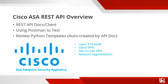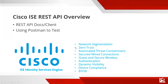Let's talk about the ISE REST API. This one is a little different and more interesting because ISE is such an amazing platform. We'll look at the API client and documentation, example scripts, and Postman for testing. If you're not familiar with Cisco ISE — the Identity Services Engine — it handles network segmentation, zero trust deployments, automated threat containment, secured wired connections, guest and secure wireless, multiple forms of authentication, dynamic visibility, device compliance, and BYOD support.